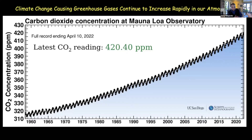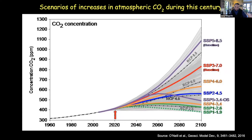Greenhouse gases are expected to drive significant changes, and we've already committed quite a bit of climate change from past emissions. But it's only part of the story for the 21st century. Looking at this graph showing plausible future emission scenarios and the CO2 concentrations that can emerge from them, you see a very wide window — and where we are right now in 2022 is around 420 ppm.